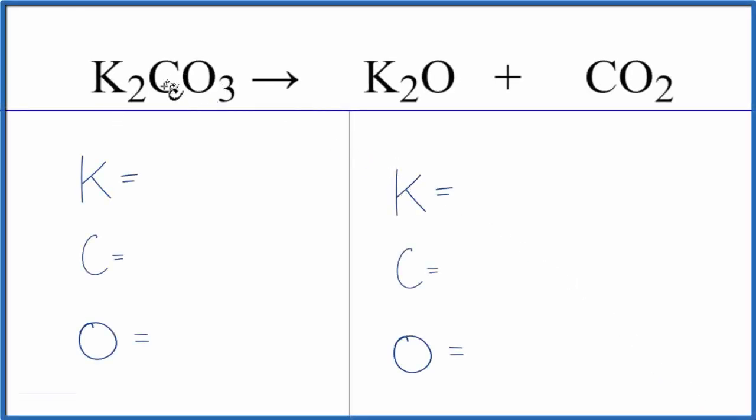In this equation, we have K2CO3 decomposing or breaking down into K2O plus CO2. This potassium carbonate undergoes a decomposition reaction. We end up with potassium oxide and carbon dioxide.